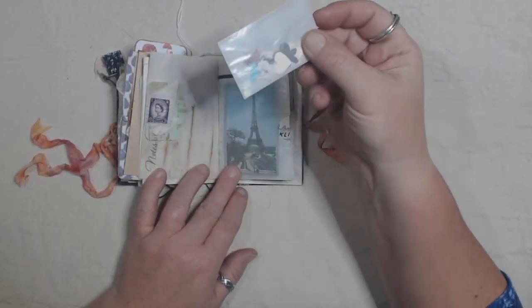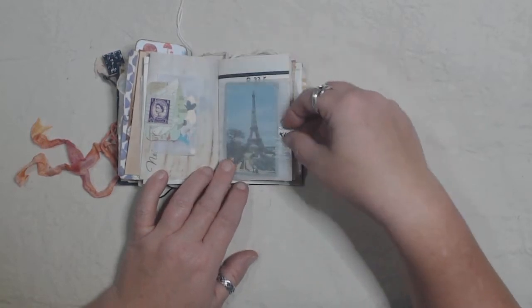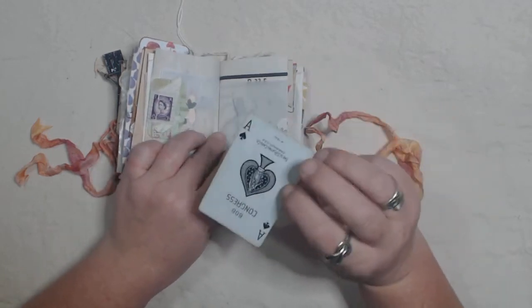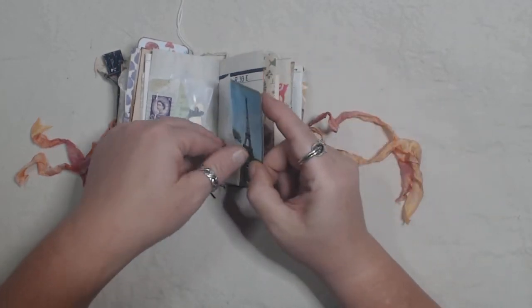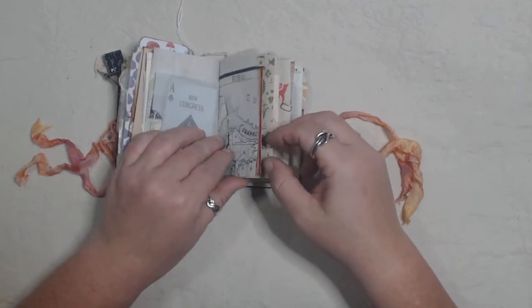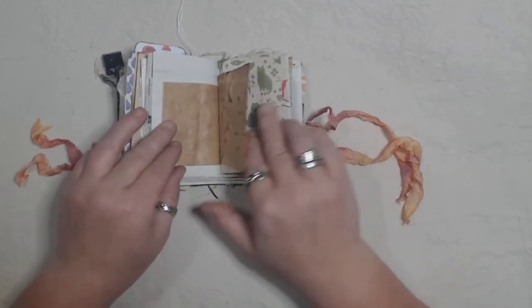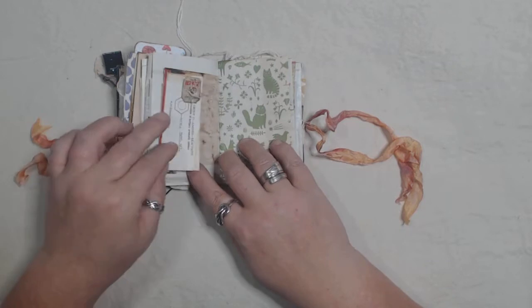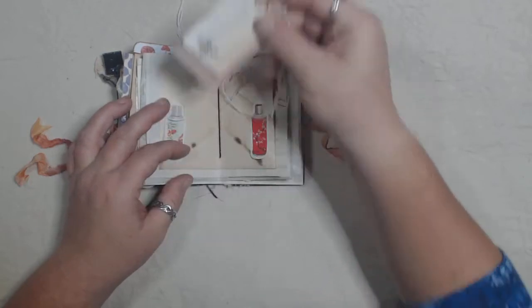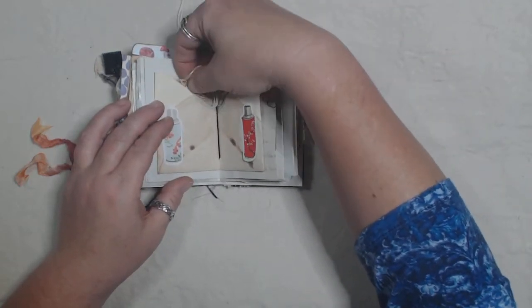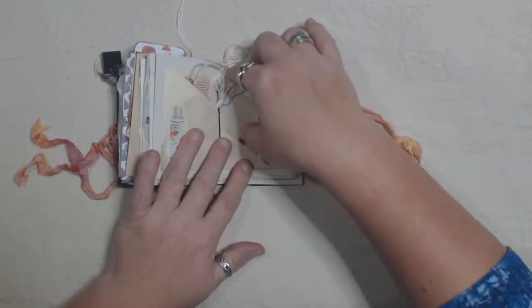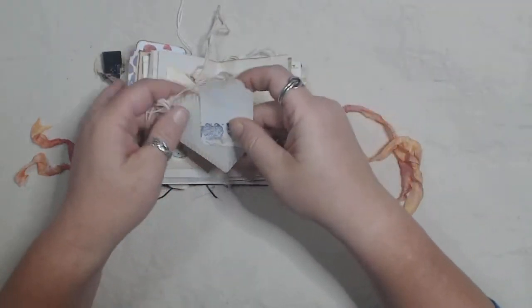A little glassine bag with some paper confetti, and Eiffel Tower playing card. There's some coffee dyed tags in here on each side. These stickers are lifting just a little bit, I'm going to have to glue those down a little bit better. I thought maybe that was going to happen.